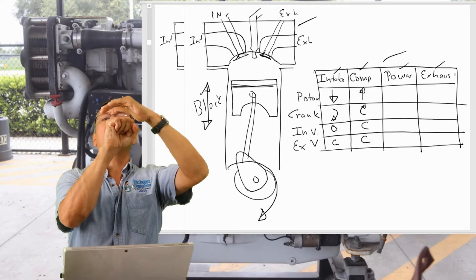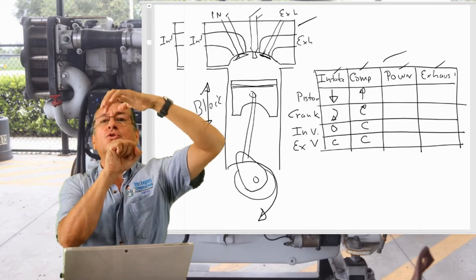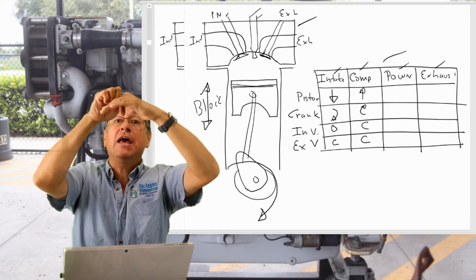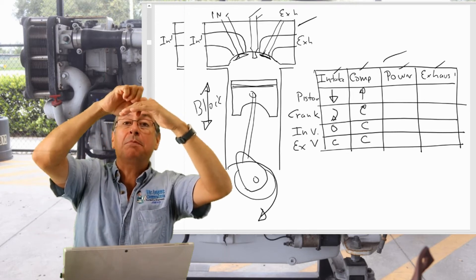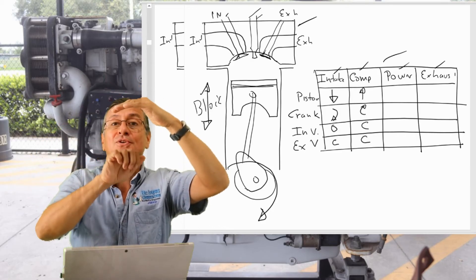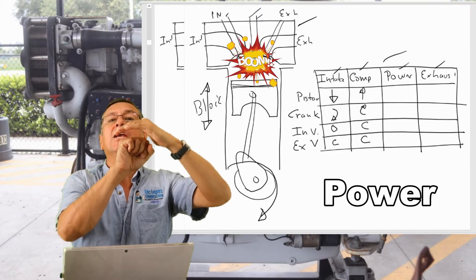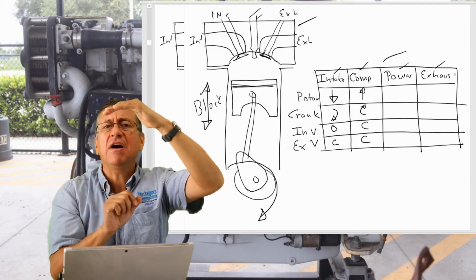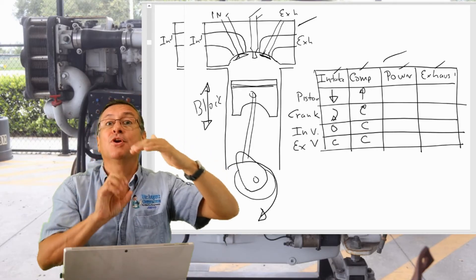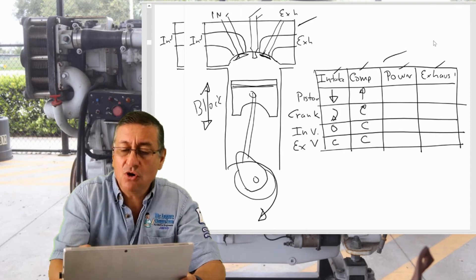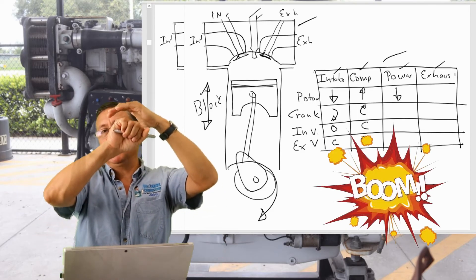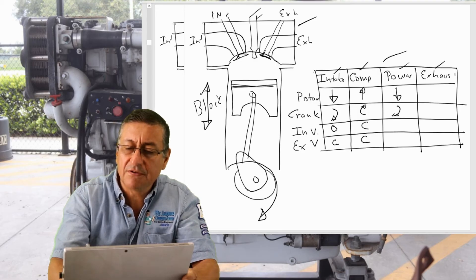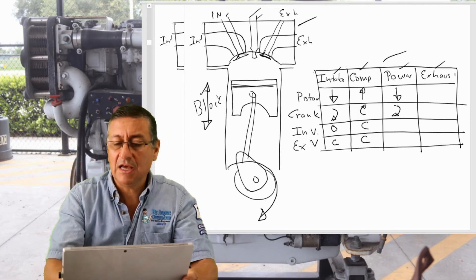Right now the piston is at top dead center, with both valves closed. Now the fuel enters in diesel engines and produces the explosion, or the spark plug produces the spark and ignites the mixture. The power is produced, the explosion sends the piston down. The valves remain closed during the power stroke, and the crankshaft rotates another half rotation.